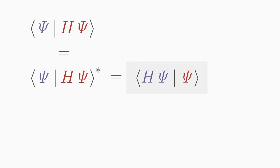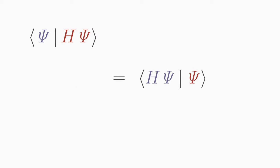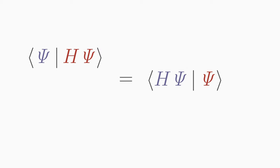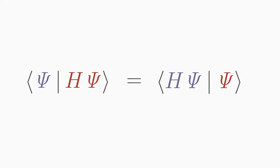The rewritten complex conjugate mean in bra-ket notation must be equal to the original mean according to our requirement. As you can see, in order for our requirement for a real mean to be satisfied, it must be possible to interchange the operator H in the scalar product. So it must not matter whether we apply H to the ket or to the bra-vector — the mean value remains the same.